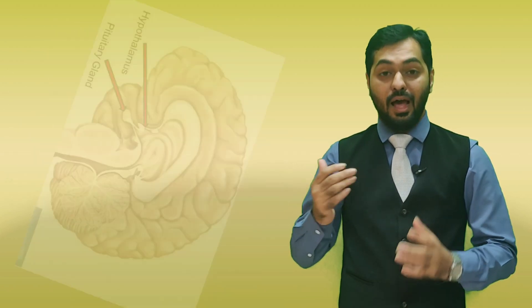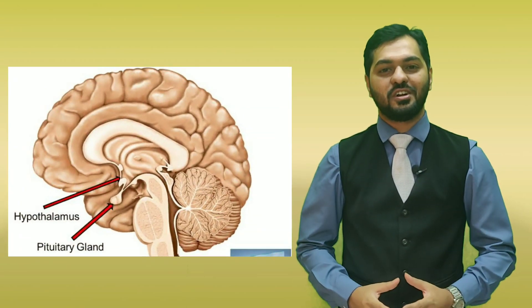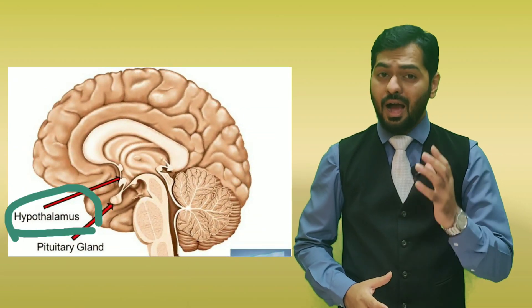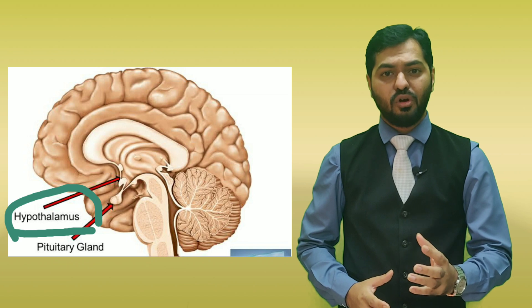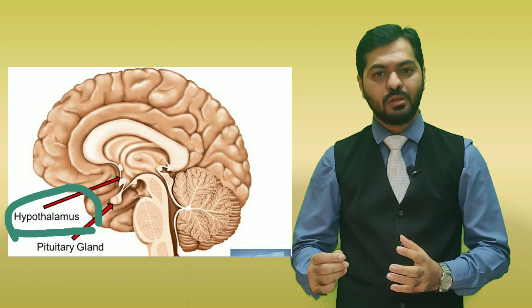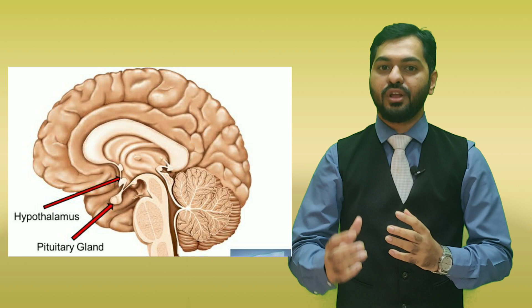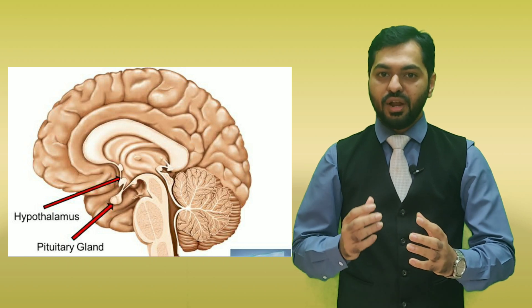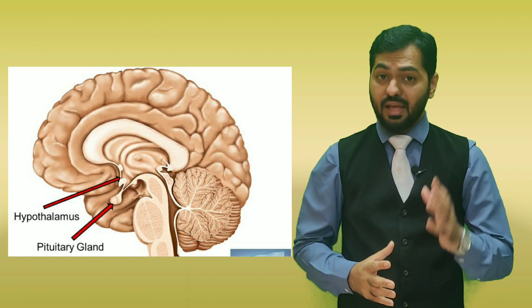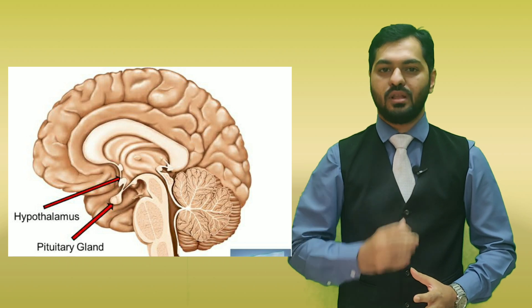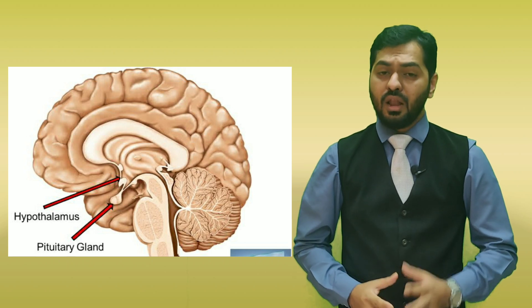In fact, the master also has a master. The master of master is considered as the hypothalamus. Hypothalamic neurons basically send signals to the pituitary gland, and that is how the pituitary gland is regulating the endocrine orchestra. And hence, the master of master is the hypothalamus.